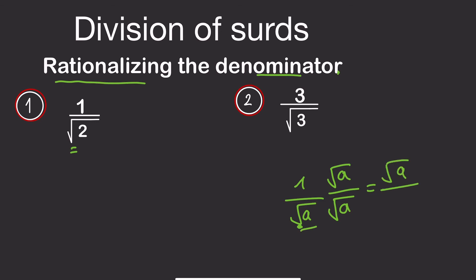Root A times root A will give us root A squared, which is the same as A. So the denominator no longer has a square root. We can do the same with this equation.